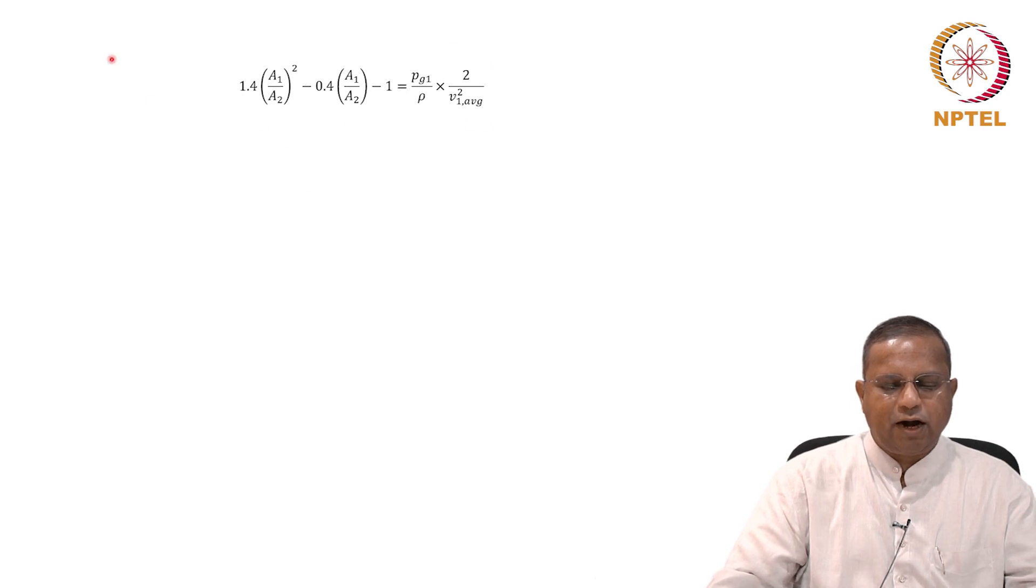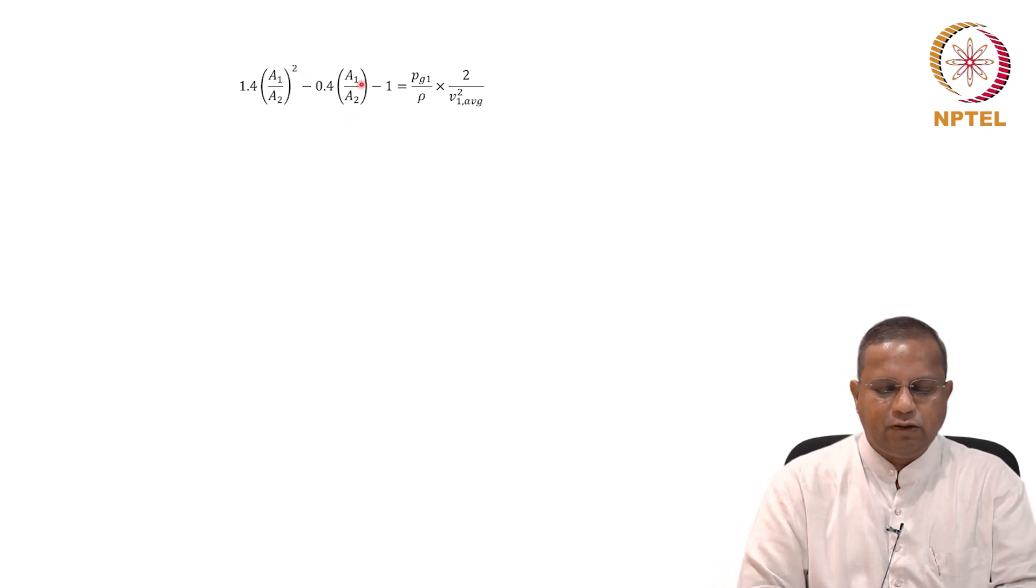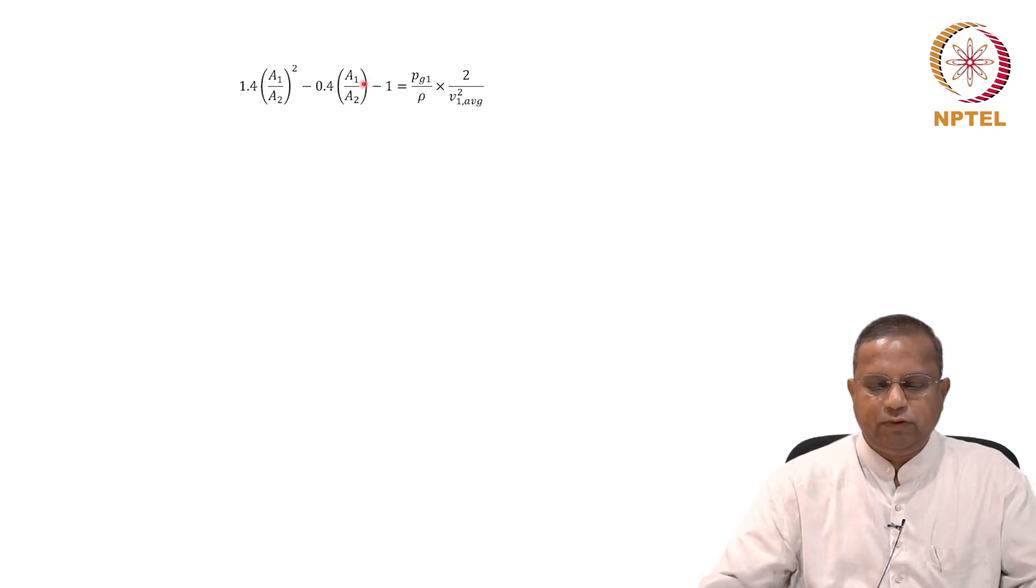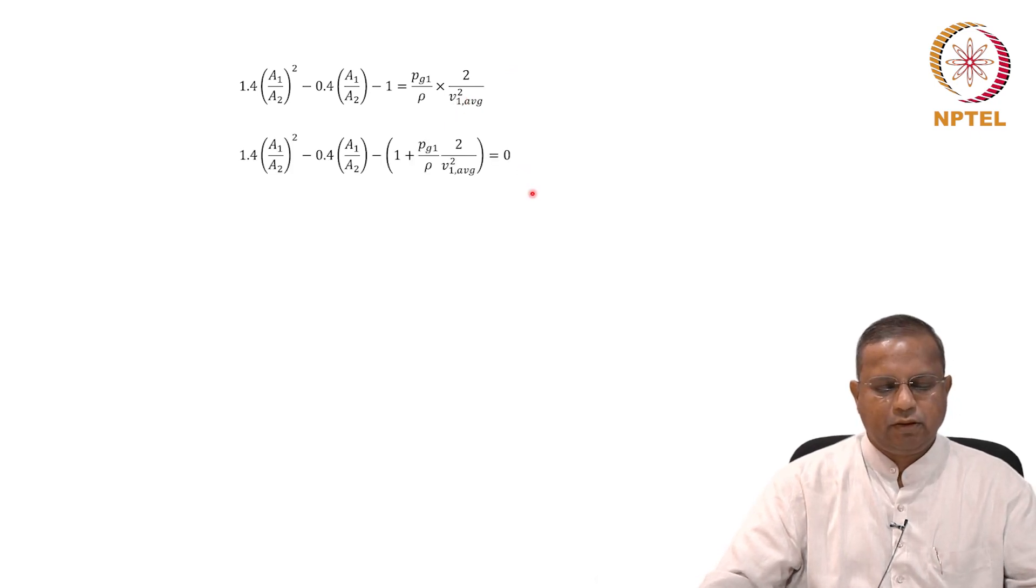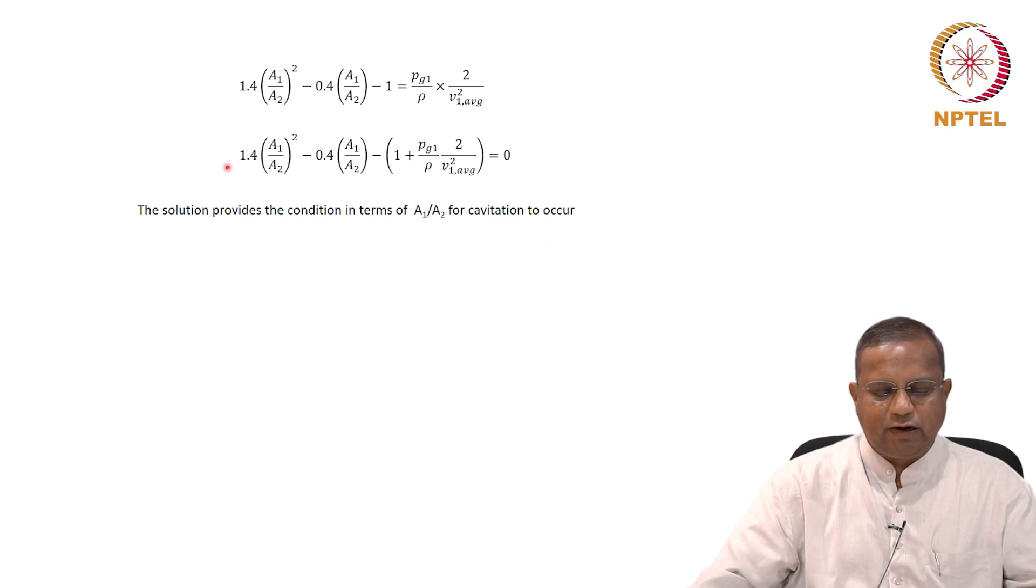So we have a quadratic equation in terms of a1 by a2. 1.4 a1 by a2 squared minus 0.4 a1 by a2 minus 1 equals pg1 by rho times 2 divided by v1 average squared. We can further simplify this, just taking this to the other side, equating to 0 effectively, subtracting this term from both sides. And solution provides a condition in terms of a1 by a2 for cavitation to occur, because we arrived at this relationship providing the conditions for cavitation, that the gauge pressure at 2 must be equal to 0. So this gives you the criterion for a1 by a2. In other words, how low, how small should a2 get for the cavitation to occur.